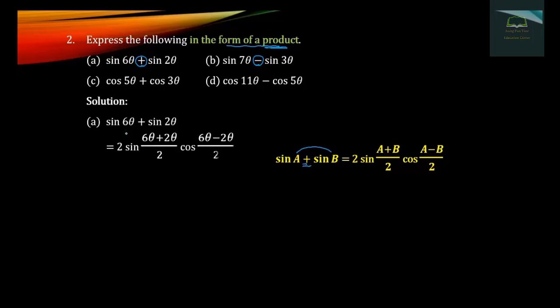2 sine cos, bounding the word. 8 theta equals 2 times 4 theta, and 3/4 theta equals 2 theta. Then 2 sine 4 theta, cos 2 theta. That gives the product from the bonus.